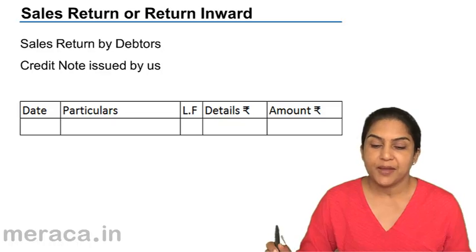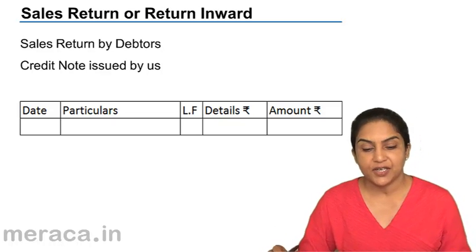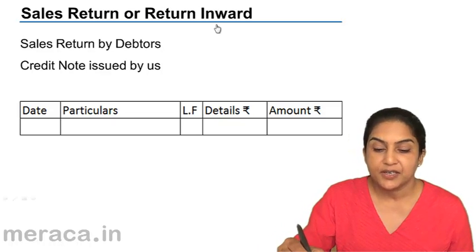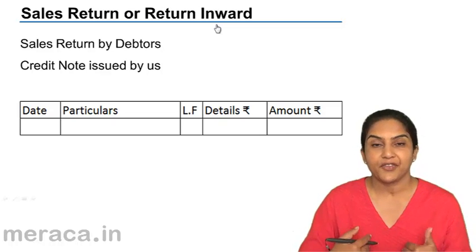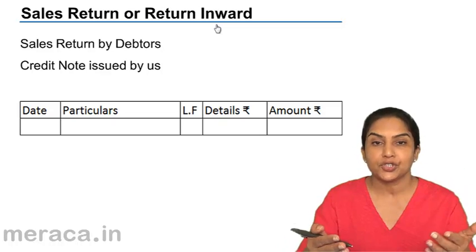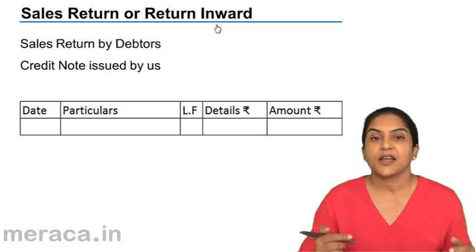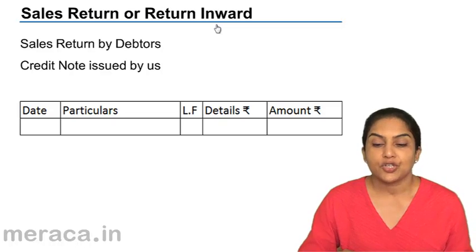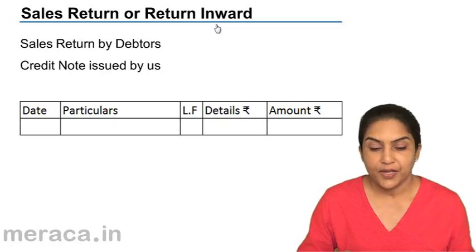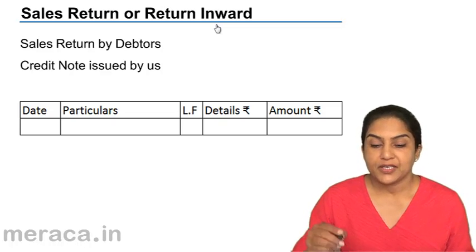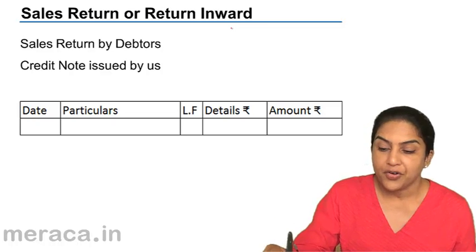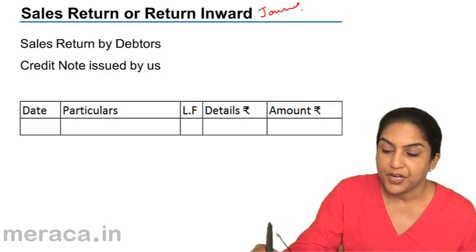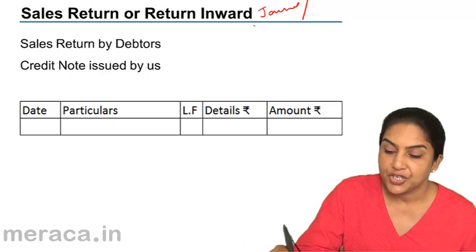We do the same thing in the case of sales return. Sales return is also called return inward, because the goods that were sold are now coming back in. Therefore, it is recorded in the sales return day book, also called the return inward journal.